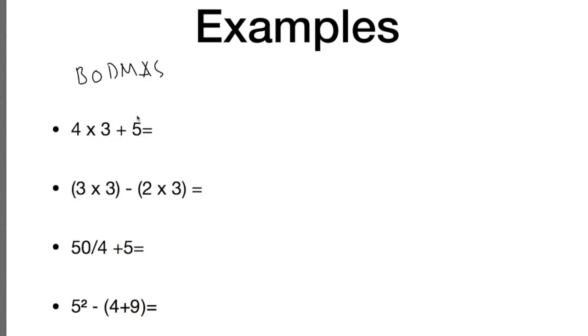So looking at the first one here, in this equation we have a multiplication and we also have an addition. Now if we follow along from BODMAS the first thing we see is the multiplication and then addition. So if we were going to do this sum we need to make sure that we do the multiplication first and then the addition. So the first bit here is 4 times 3. 4 times 3 is 12, and then add the 5, our answer is 17.